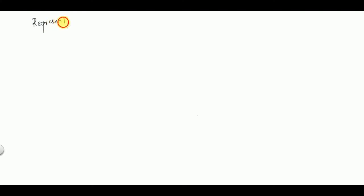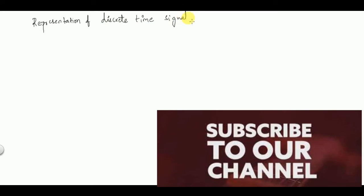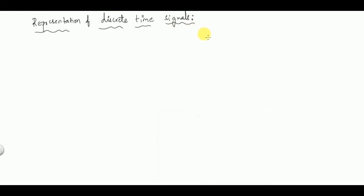Welcome back. In this video we are going to learn about representation of discrete time signals. As we have already learned in a previous video, discrete time signals are obtained from continuous time signals by the process called sampling. So by the process of sampling we are going to have discrete time signals from continuous time signals.